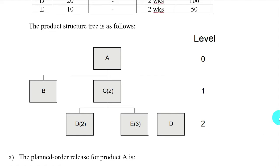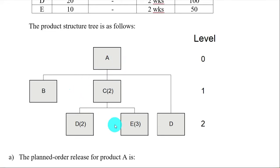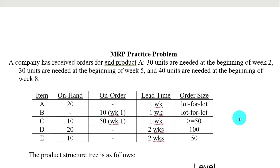To fill out the MRP form, we'll start by filling out the MPS first, and then the MRP form for each item. We fill out the level-zero item first, which is A, because the MRP module is executed in a top-down fashion — level zero first, then level one, two, and so on.